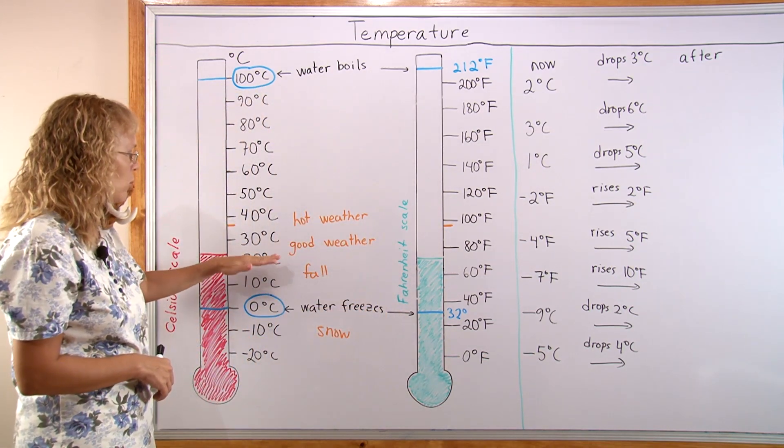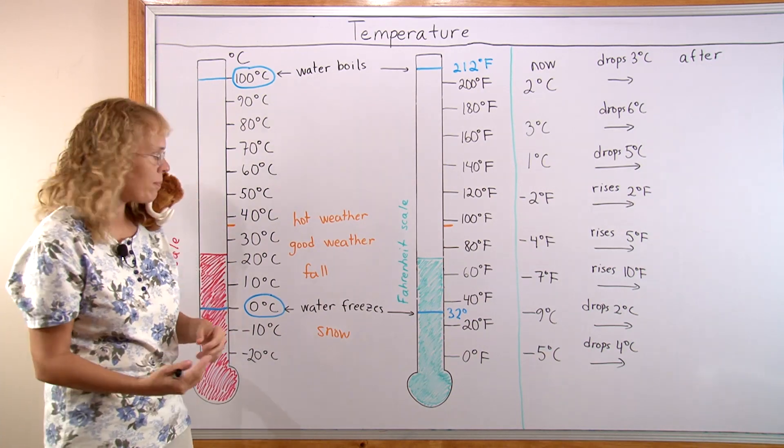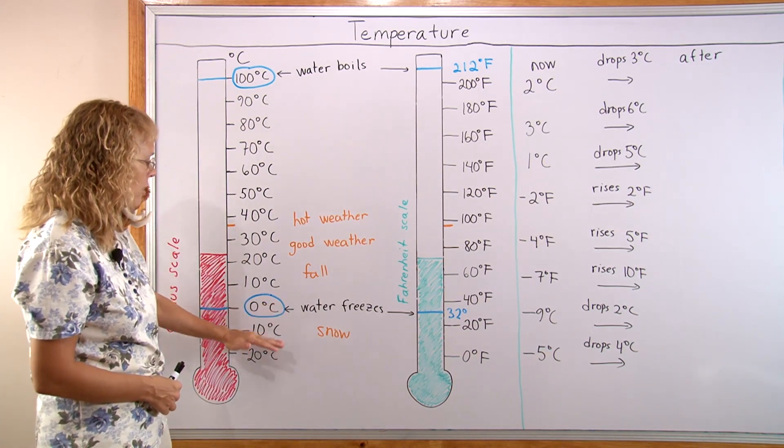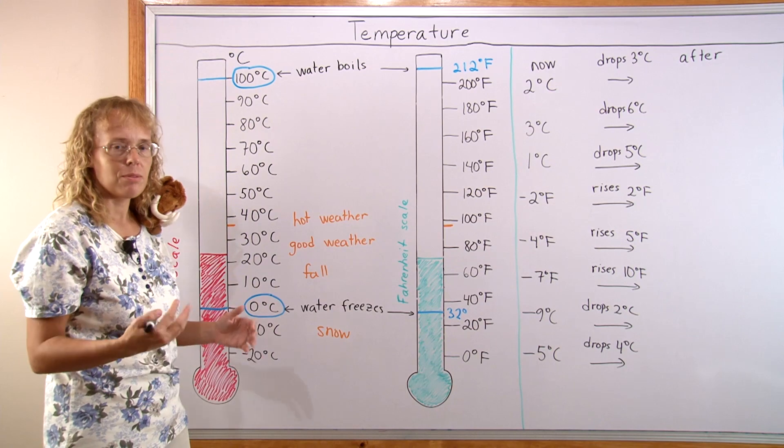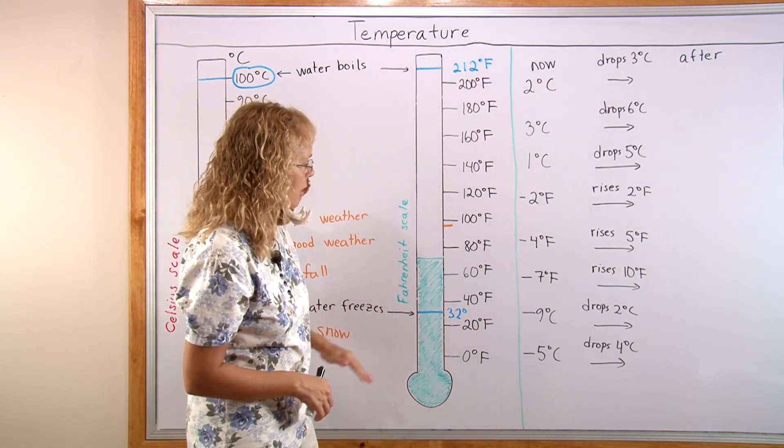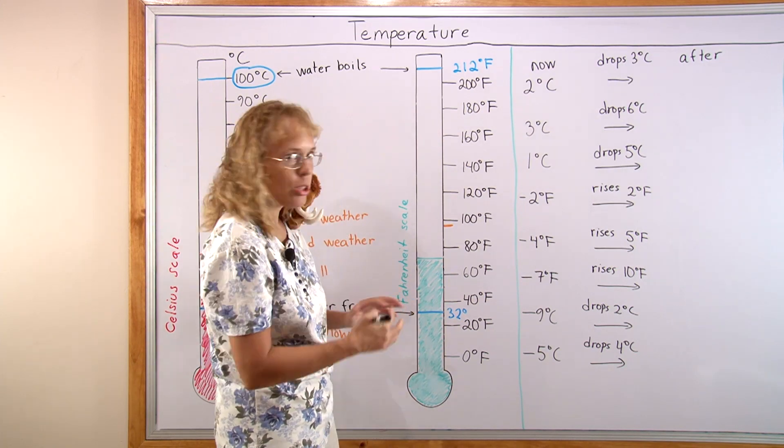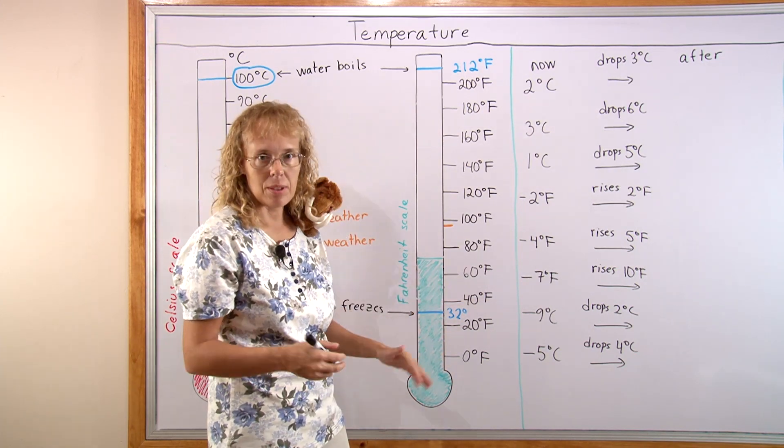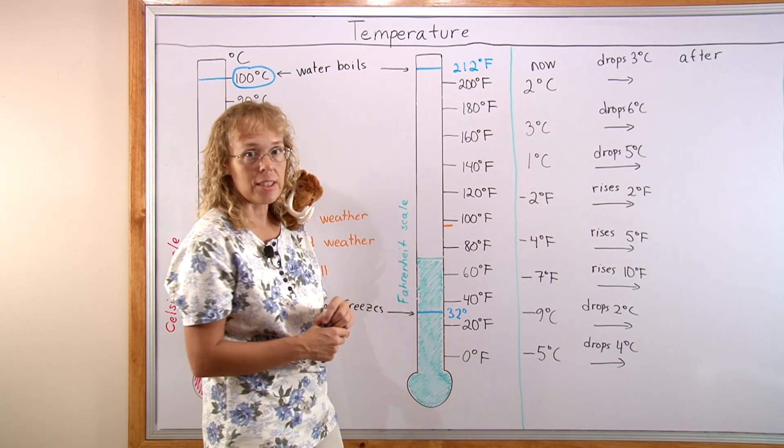Below 20 we get into fall, cool weather. In the Fahrenheit, the fall and cool weather would be below 70, like 60 something, 50 something, 40 something, even 30 something.